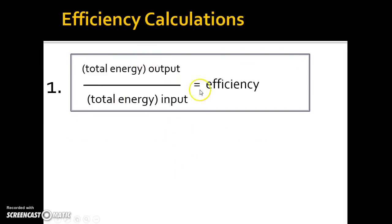Our basic efficiency equation: efficiency is output divided by input. This applies to a furnace at your home, a giant natural gas boiler in a school, or something as large as a power plant. If something is 100% efficient, that means the output equals the input. If it's 50% efficient, that means you get half the output for the total input.